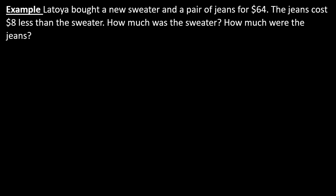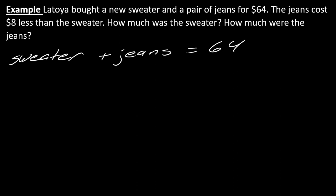Latoya bought a new sweater and a pair of jeans for $64. The jeans cost $8 less than the sweater. How much was the sweater, and how much were the jeans? This is actually very similar to the last problem — it's talking about combining two things to get a total. I highly recommend you pause the video and try a similar approach to what we did in the last one. The sweater plus the jeans equals $64 — that's where our equal sign is. The jeans cost $8 less than the sweater, and I don't know how much the sweater costs, so the sweater is represented as X.